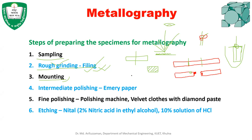Rough grinding uses a hand file to get rid of large dents on the surface. After filing, you'll see directional lines on the surface. This is a preliminary step before intermediate polishing, where you make the surface mirror-like, obtaining a more polished surface with fewer bumps.